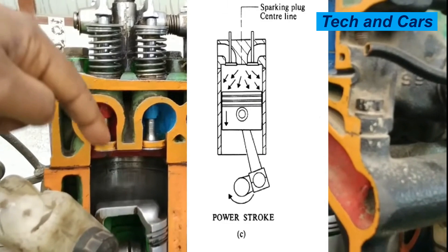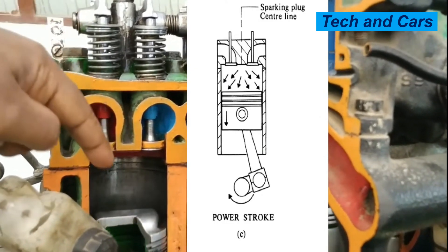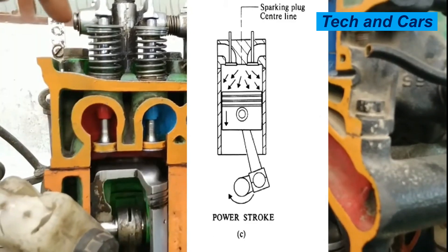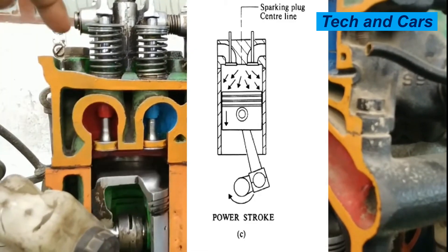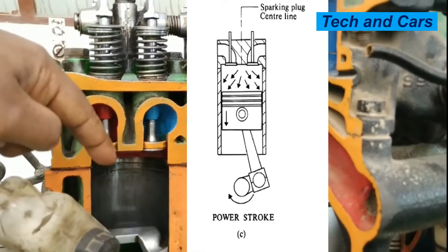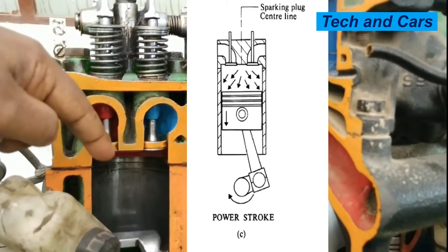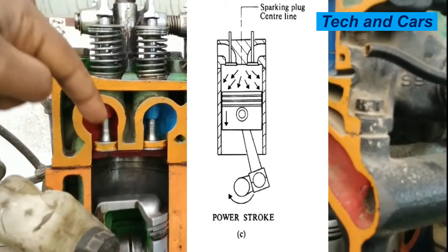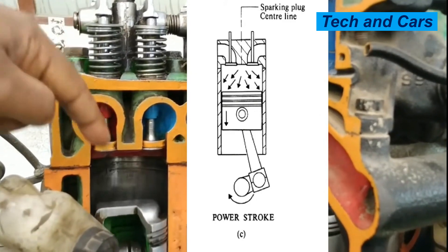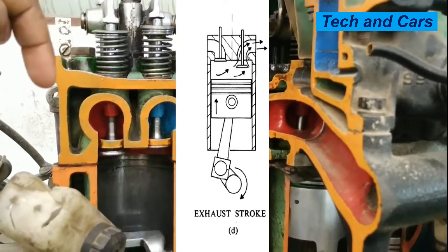This will lead us to the power stroke. Immediately after the compression stroke is completed, the mixture inside the cylinder is ignited by the spark plugs. Cylinder temperature and pressure increases rapidly, and the burning and expansion of gases is so rapid that the piston is forced down — this is the power stroke, and it is the stroke that provides the power to propel the vehicle. When the piston is approaching the bottom of the power stroke, the exhaust valve is opened, allowing the burnt gas to escape from the cylinder.